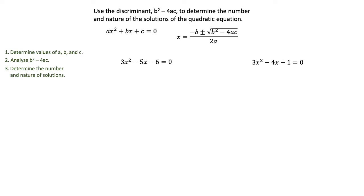Typically you'll have equations in the form ax² + bx + c = 0. If they're not in this form, you'll manipulate them to this format. Then you can identify values of a, b, and c. In the first example, a is 3, b is -5, and c is -6.